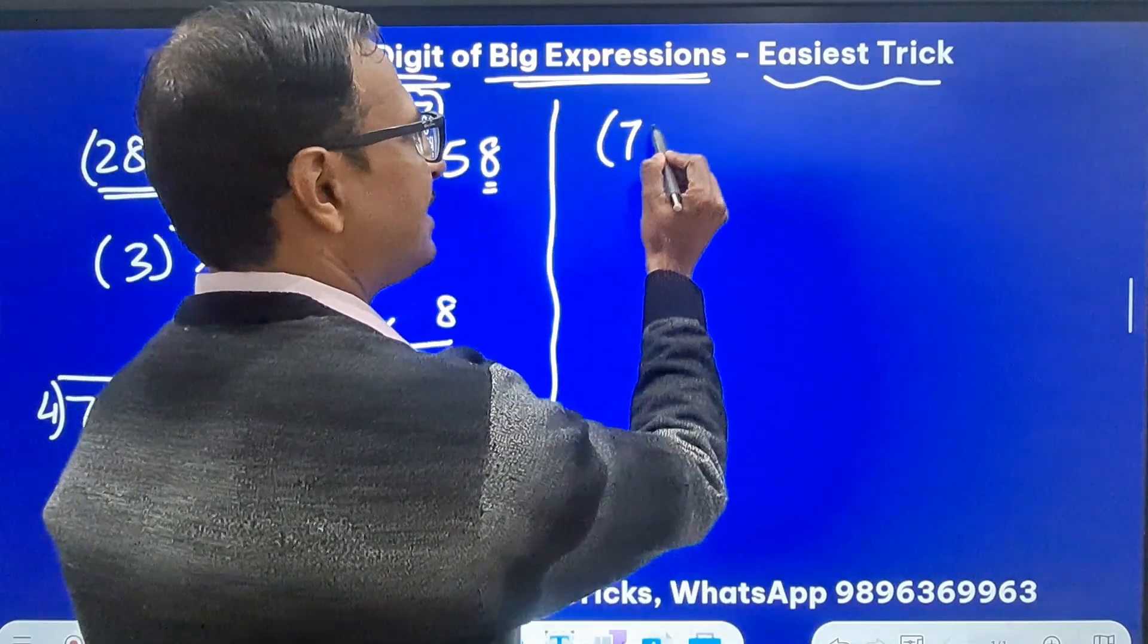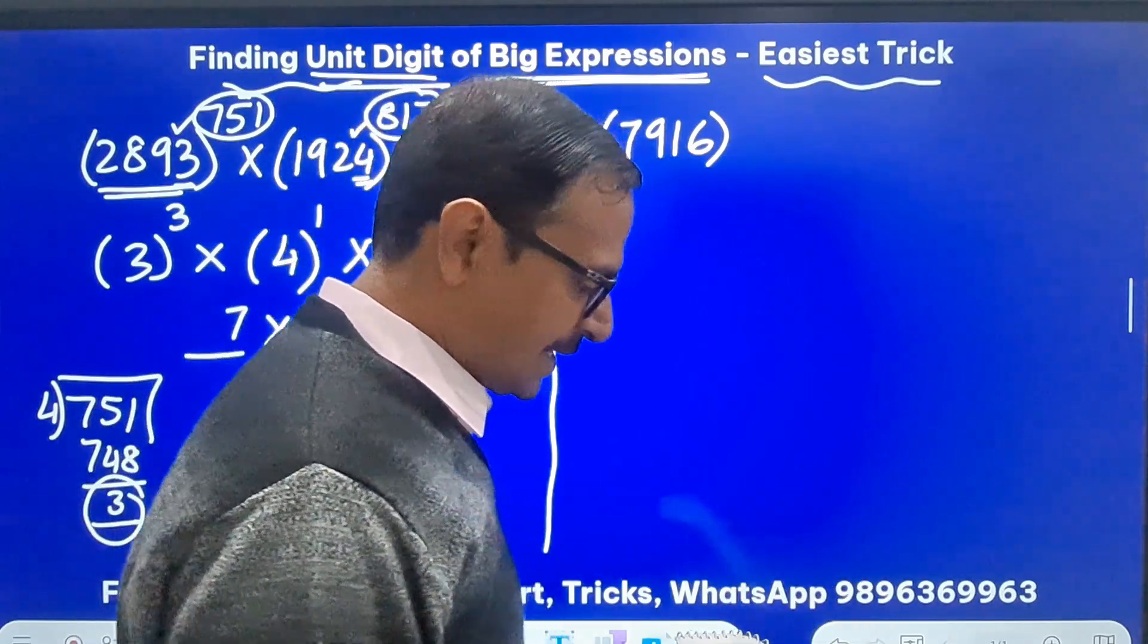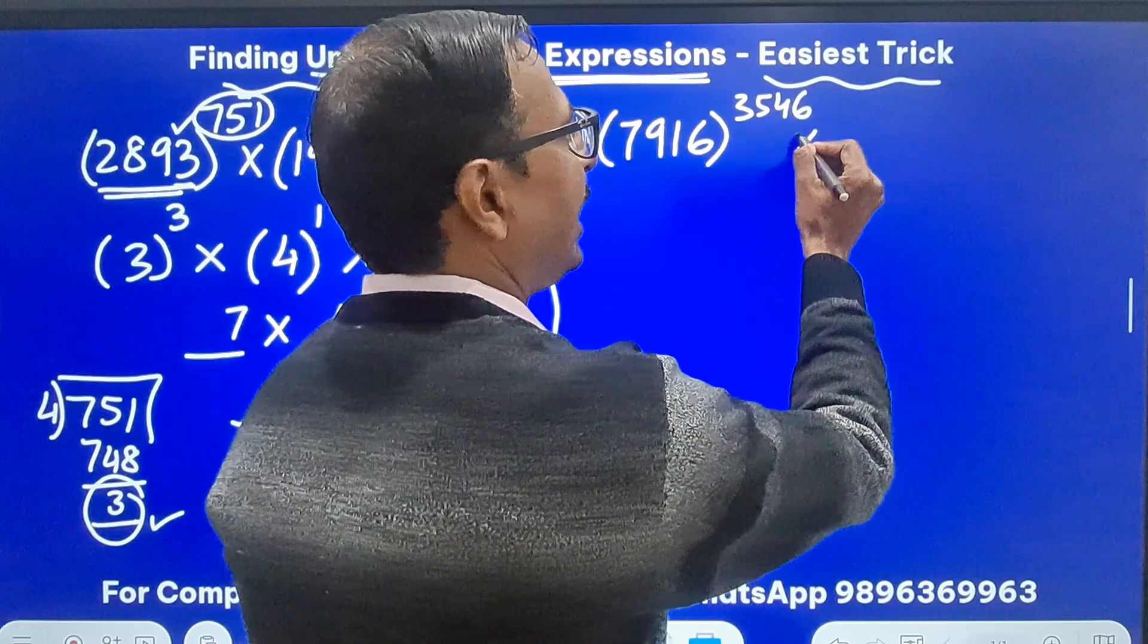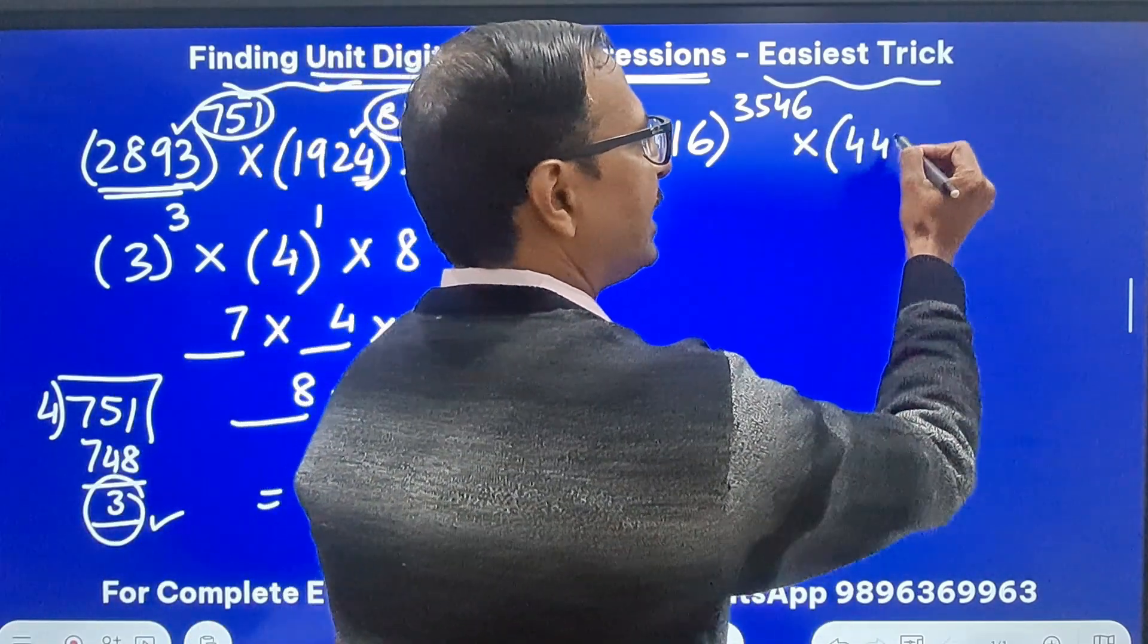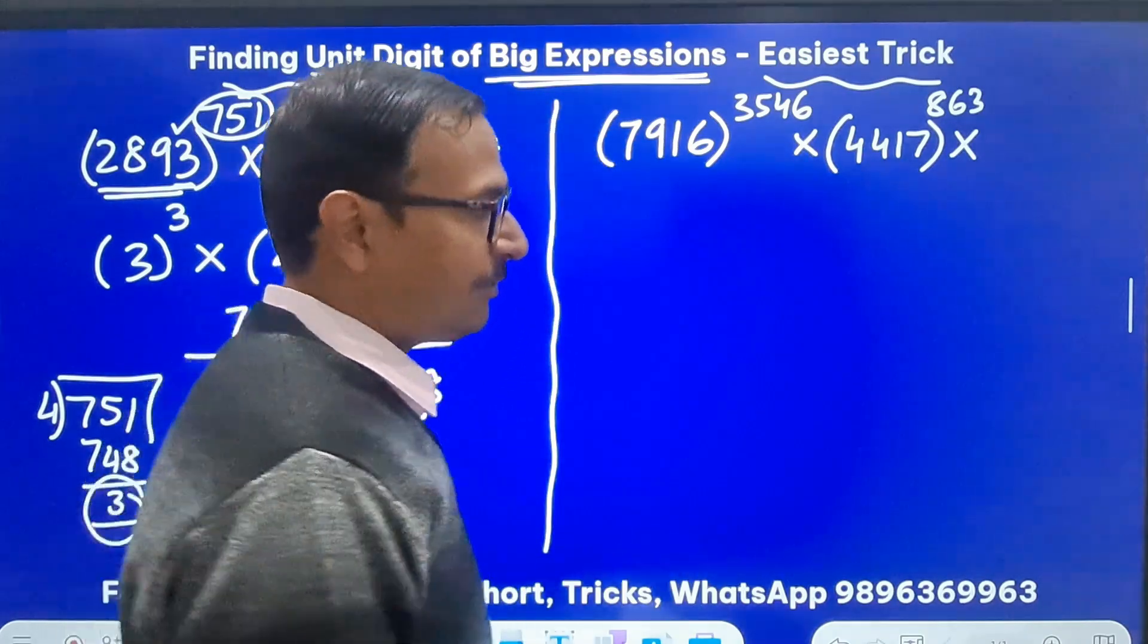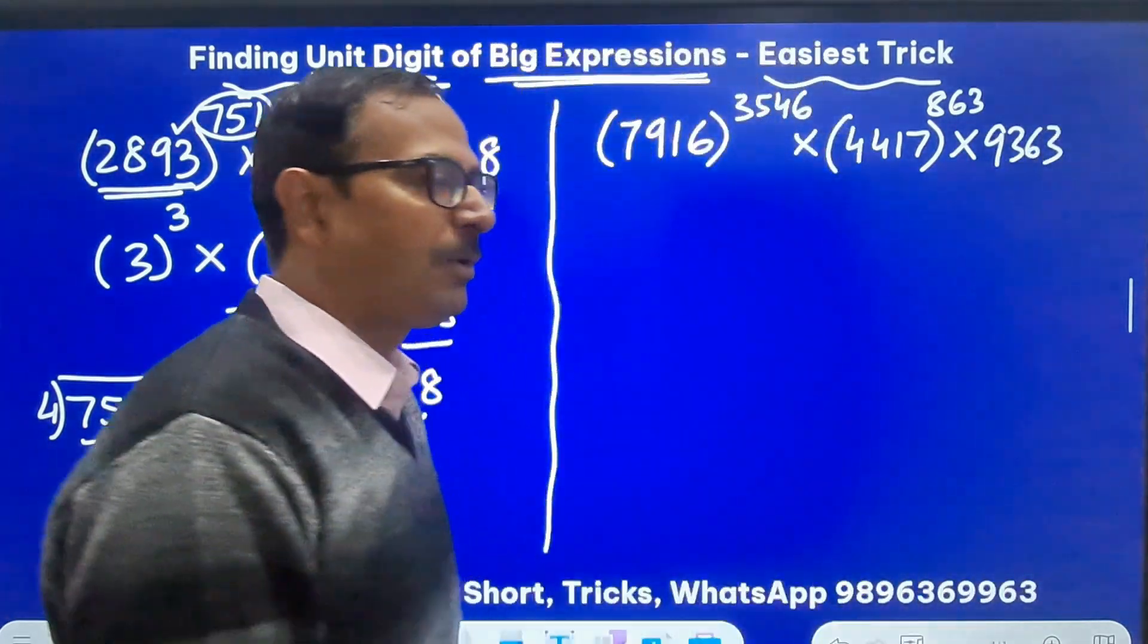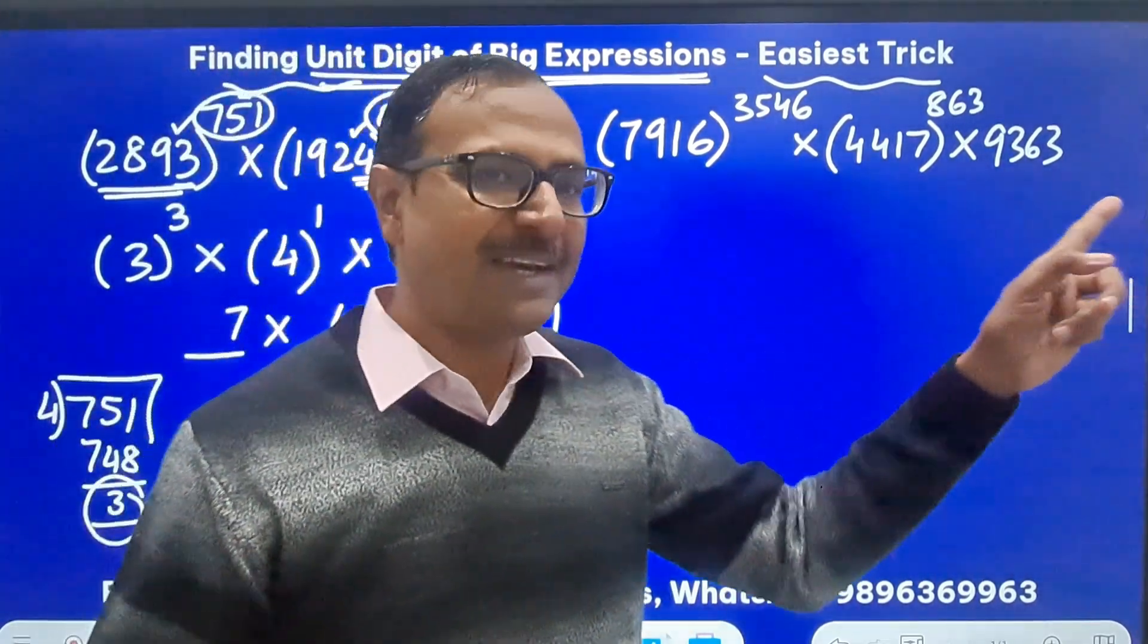Okay let's take this: 7916 was the base in one of the examinations and we have 3546 as the exponent and we are multiplying it by 4417 that is the base with 863 as the exponent and finally we have multiplied by 9363, a big calculation there and we want to find the unit digit of this calculation.